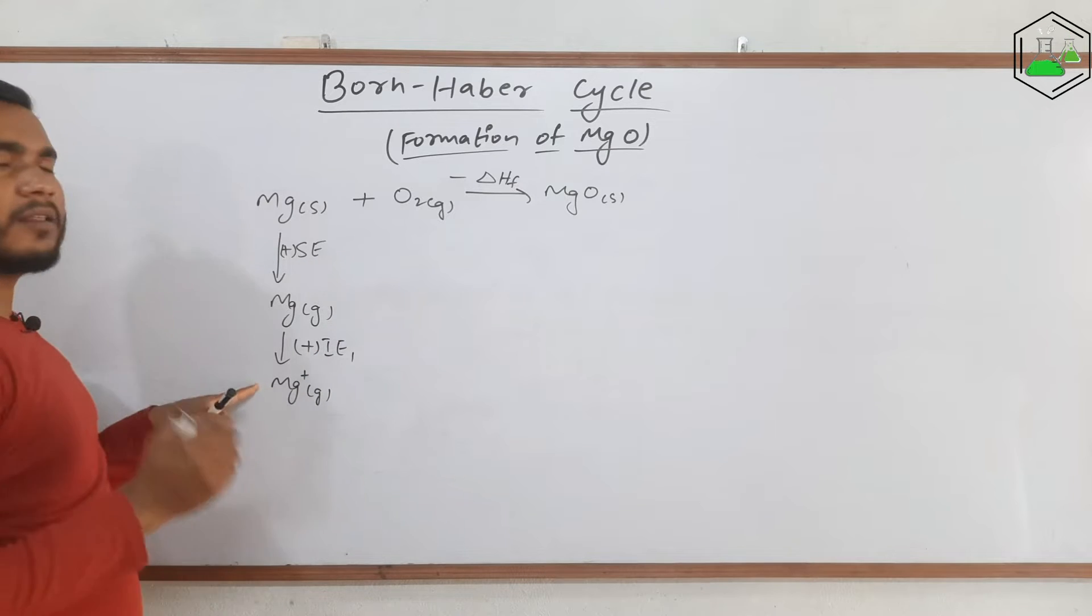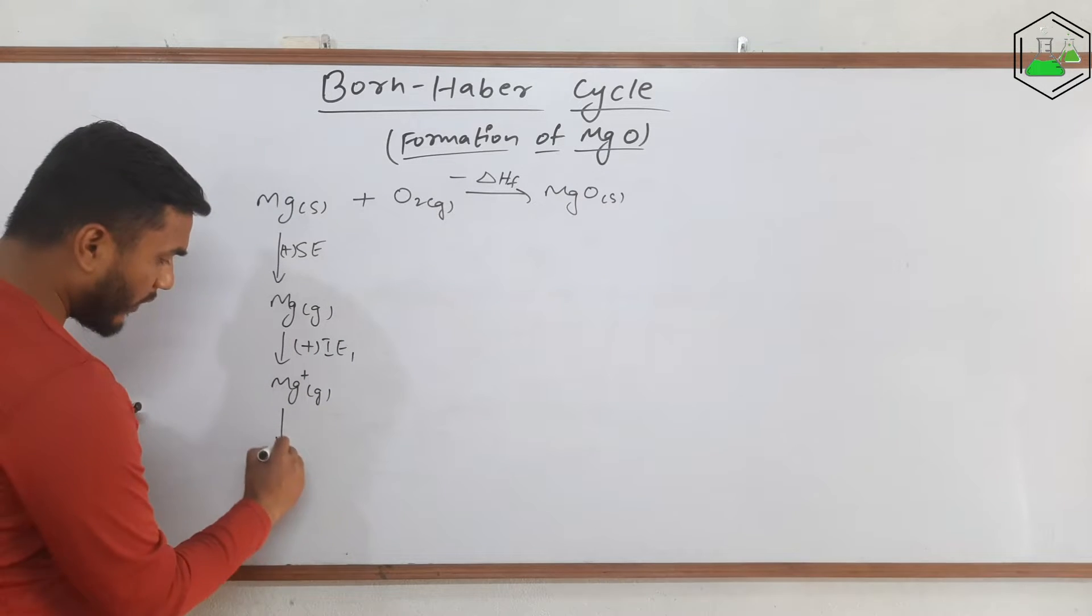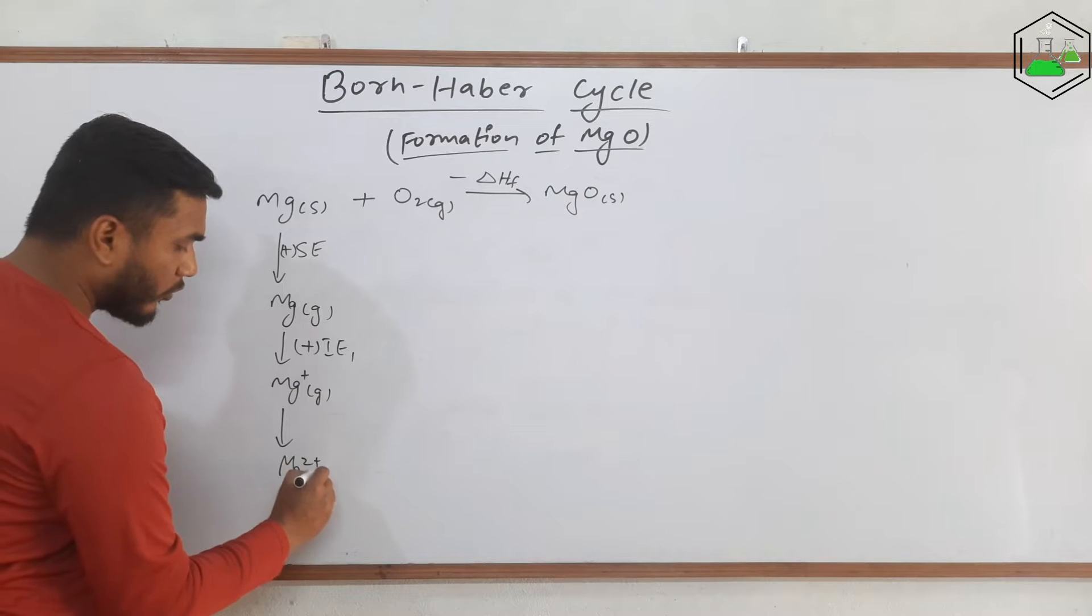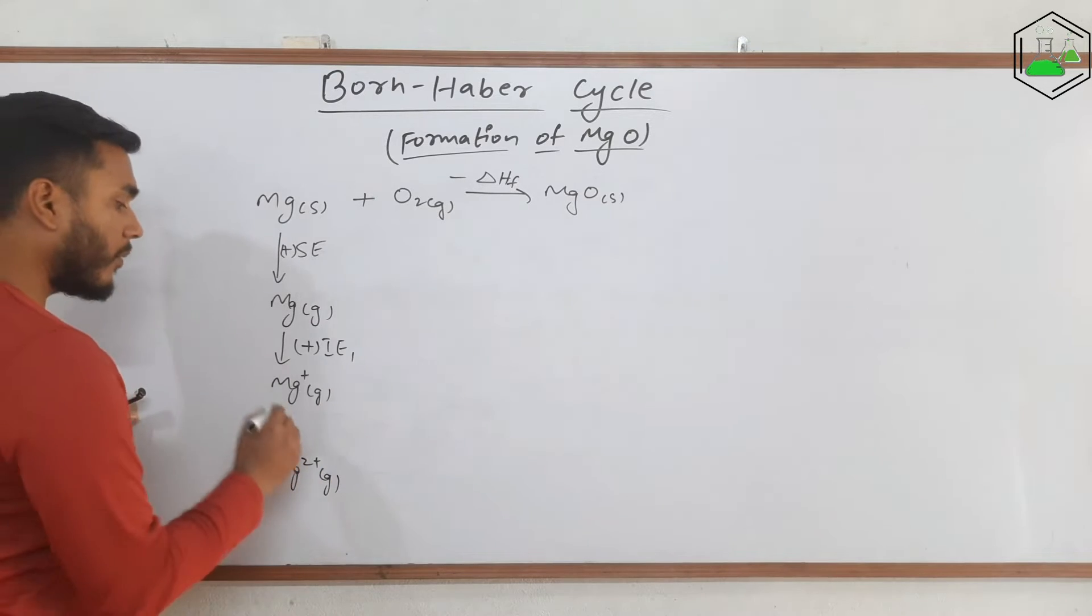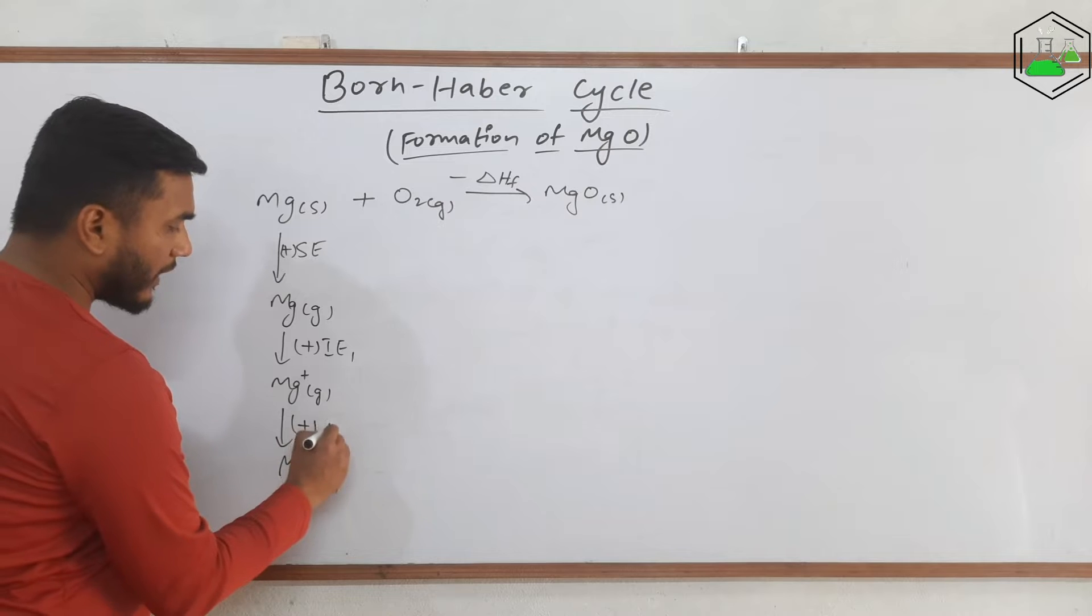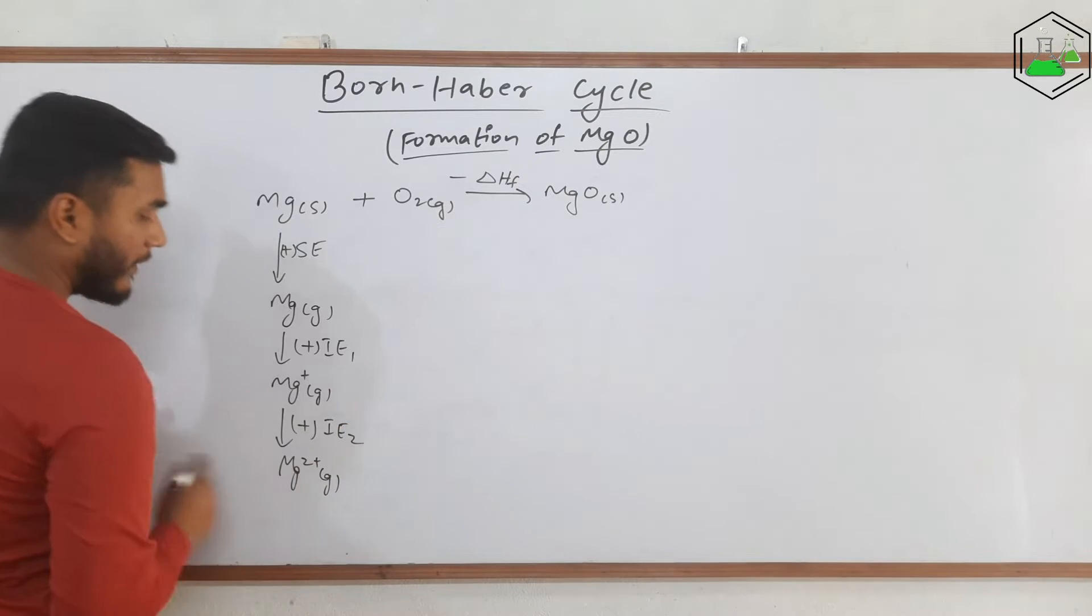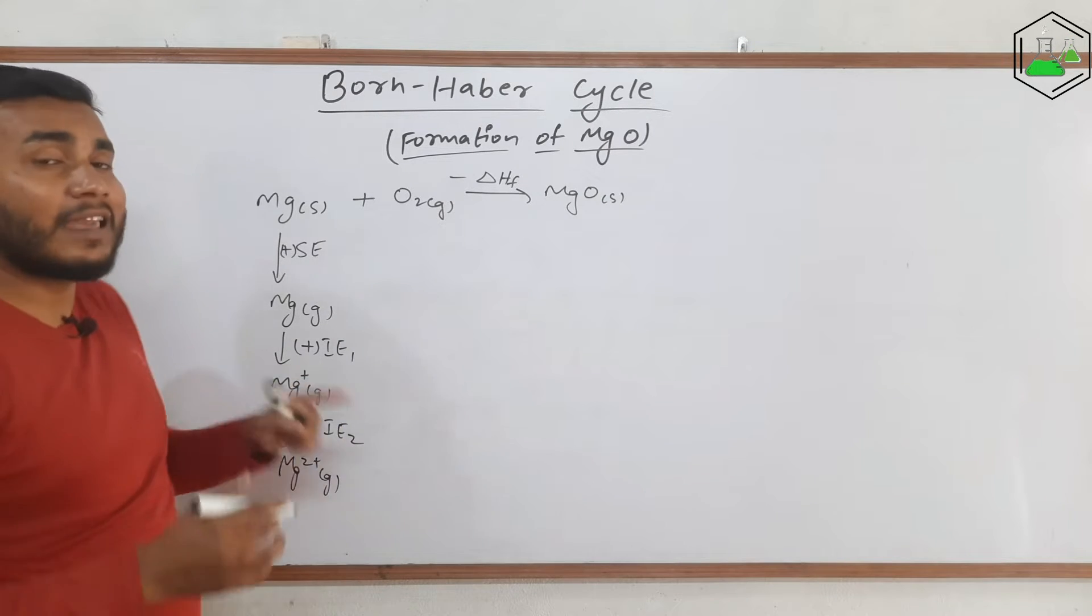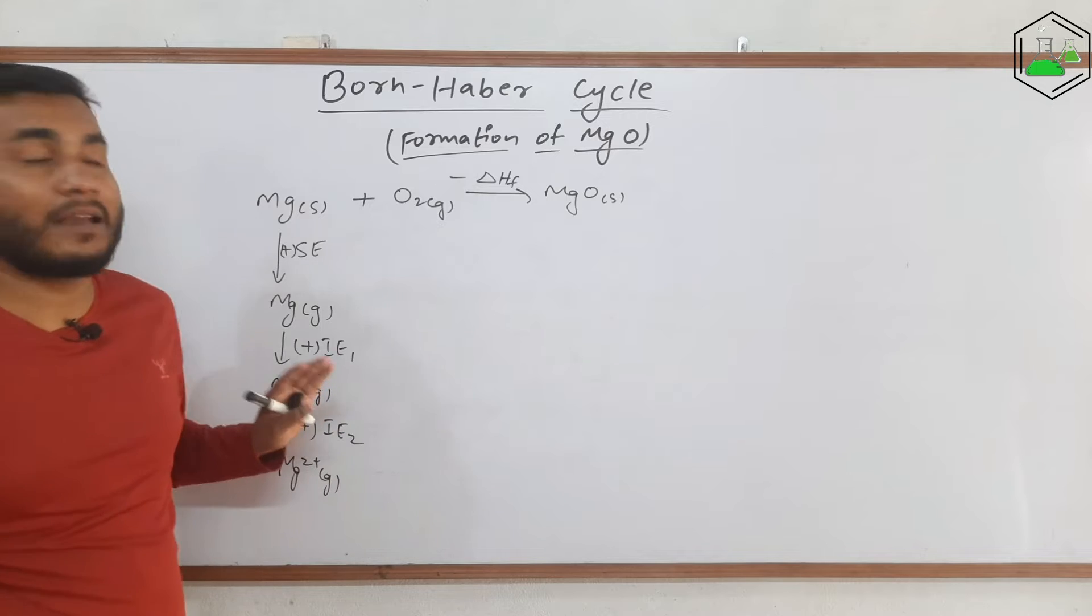But the valency of magnesium is 2. So it will lose one more electron to convert into Mg2+ form and it will need more energy that is IE2, and finally it converts to Mg2+ gaseous ion and it is ready for the reaction.